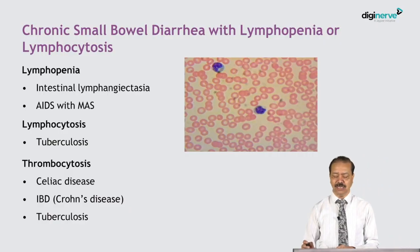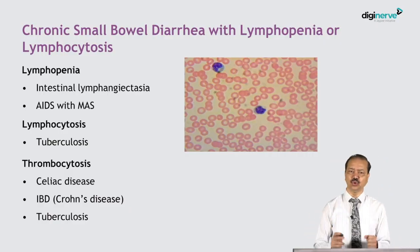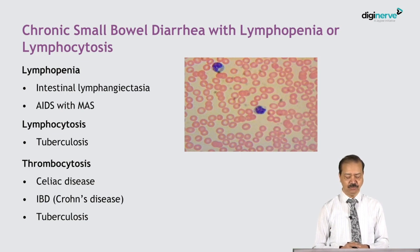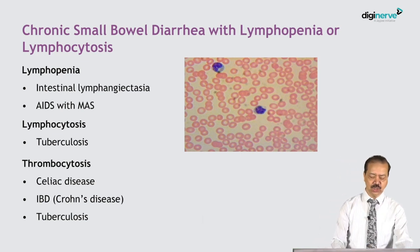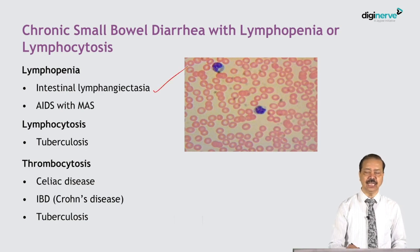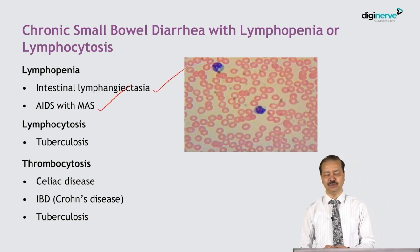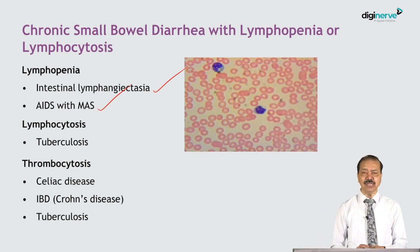Chronic small bowel diarrhea can have associated lymphopenia. The two conditions to suspect in a patient with chronic small bowel diarrhea with lymphopenia are intestinal lymphangiectasia and acquired immunodeficiency syndrome with malabsorption.